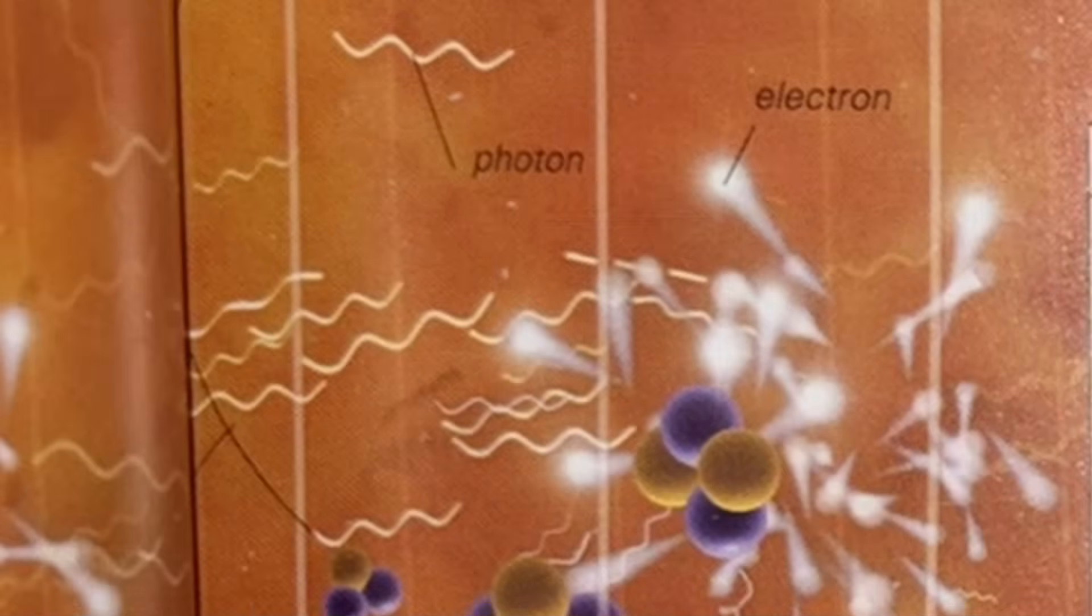However, despite the cooling, it was still too energetic for atoms to form. If any electrons momentarily met with protons or helium nuclei, they were quickly split apart by photons, which were themselves trapped in a process of continual collision with free electrons. This scattering of photons by electrons meant that the photons could not travel far in any direction in a straight line.